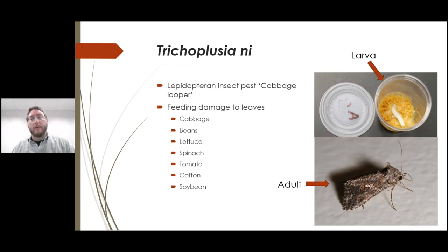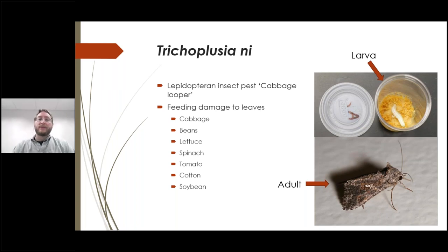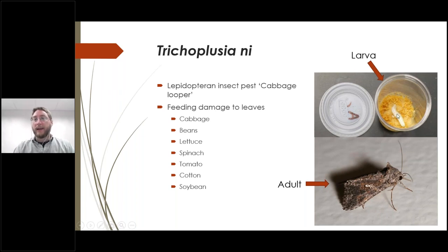The second player is the insect pest, the cabbage looper Trichoplusia ni, which can feed on a number of crops including cabbage, beans, lettuce, spinach, tomato, cotton, and soybean. We utilized this insect because it feeds on a number of important crops. The larvae feed in an insect feed cup on general purpose lepidopteral diet, pupate, and eventually emerge as adults.